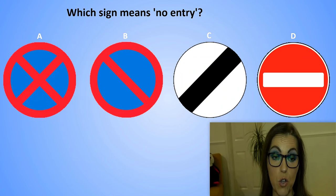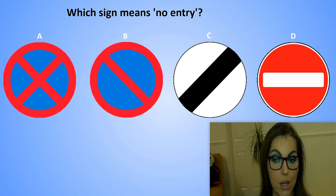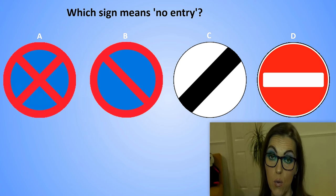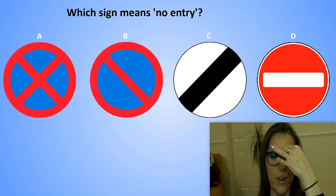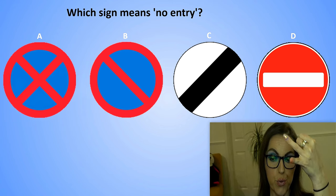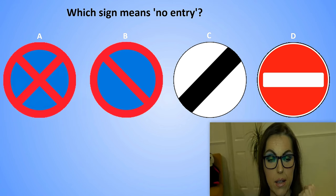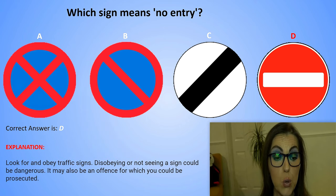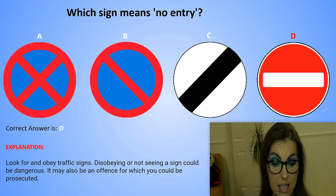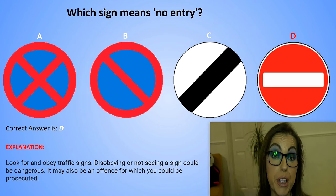Which sign means no entry? Sign A, Sign B, Sign C, or Sign D? Look for and obey traffic signs. Disobeying or not seeing a sign would be dangerous. It may also be an offence for which you could be prosecuted.